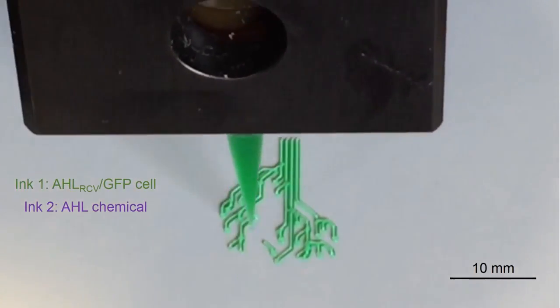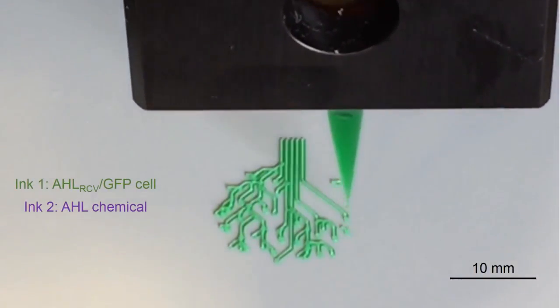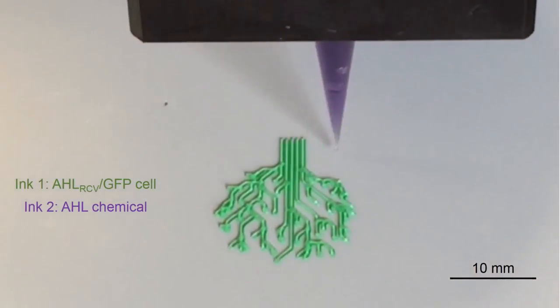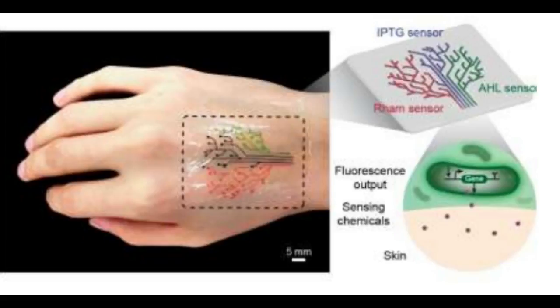They then adhered the transparent elastomer layer with the living patterns on it to skin. To test the patch, the researchers smeared several chemical compounds on the back of a test subject's hand, then pressed the hydrogel patch over the exposed skin.